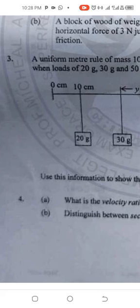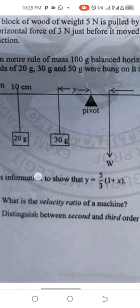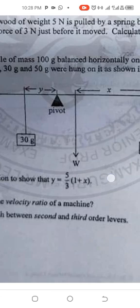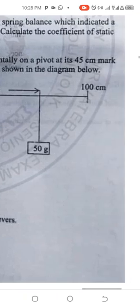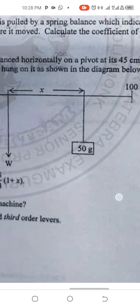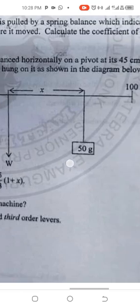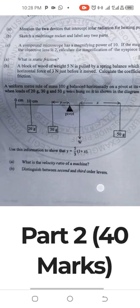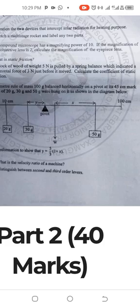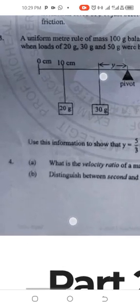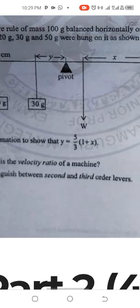Question three: a uniform meter rule of mass 100g balanced horizontally on a pivot at its 45cm mark when loads of 20g, 30g, and 50g were hung on it as shown in the diagram. Use the information to show that Y is equal to 5 over 3, bracket 1 plus X, close bracket.